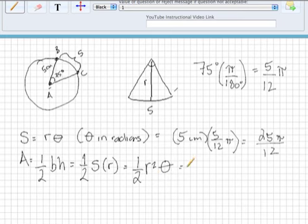So let's go ahead and plug into that. S we already determined, so let's go ahead and plug that in. 1 half S, 25 over 12 pi, times R, and R is 5 centimeters.